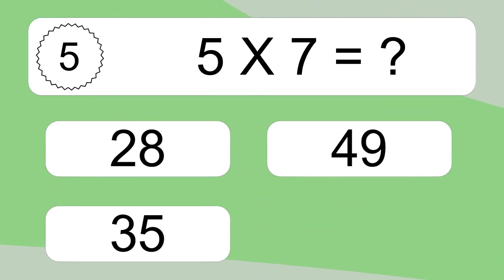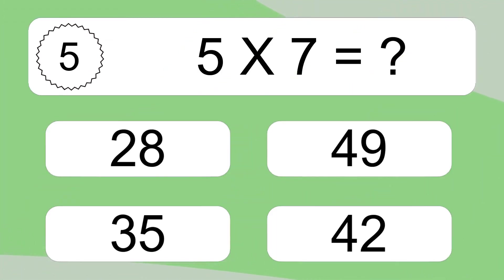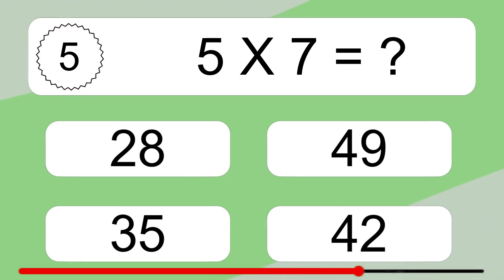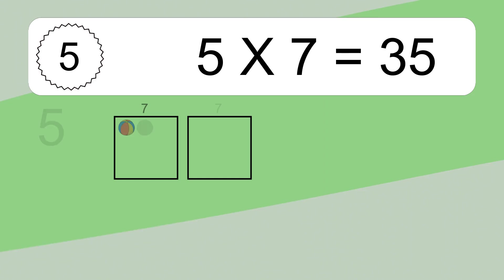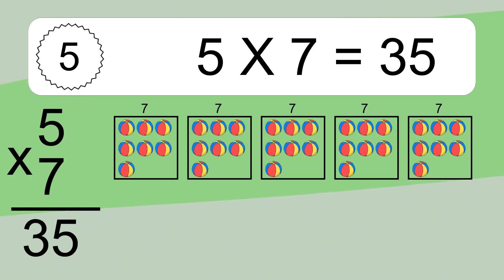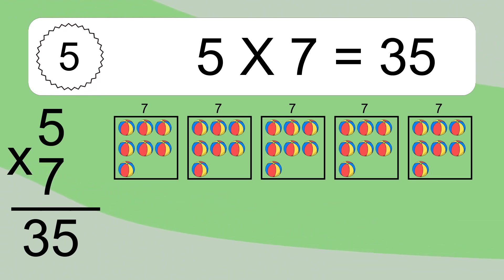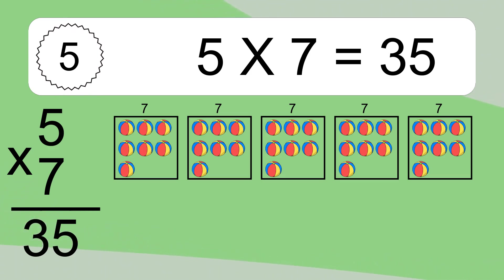Five times seven equals what? Five times seven equals thirty-five. We have five boxes, and each box has seven colorful balls inside. If you count all the balls in all the boxes together, you will have five times seven balls. This equals thirty-five balls.